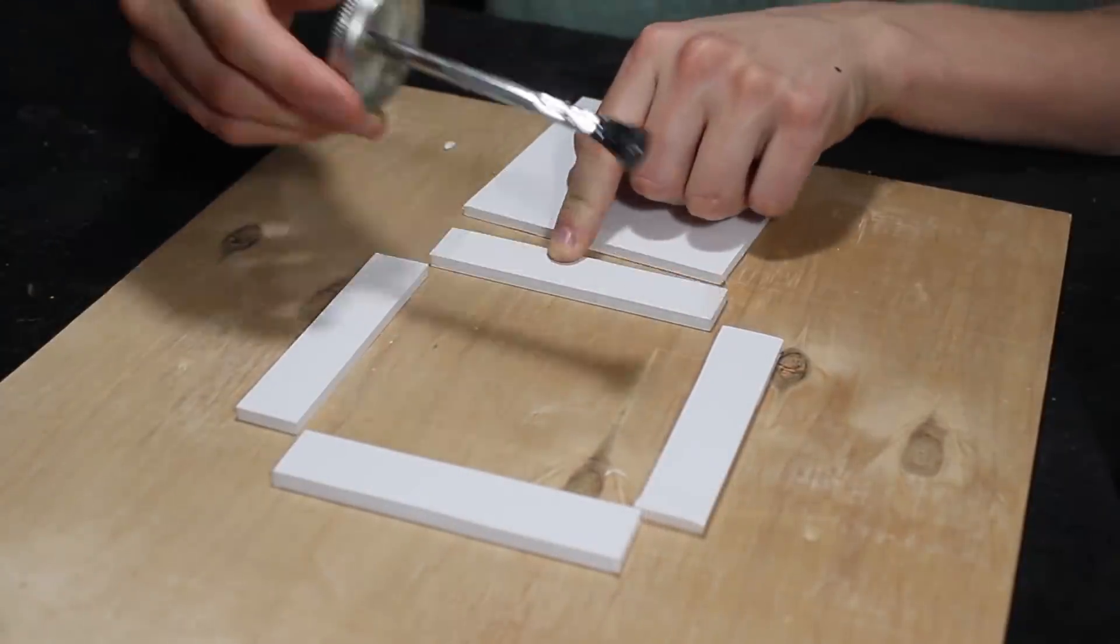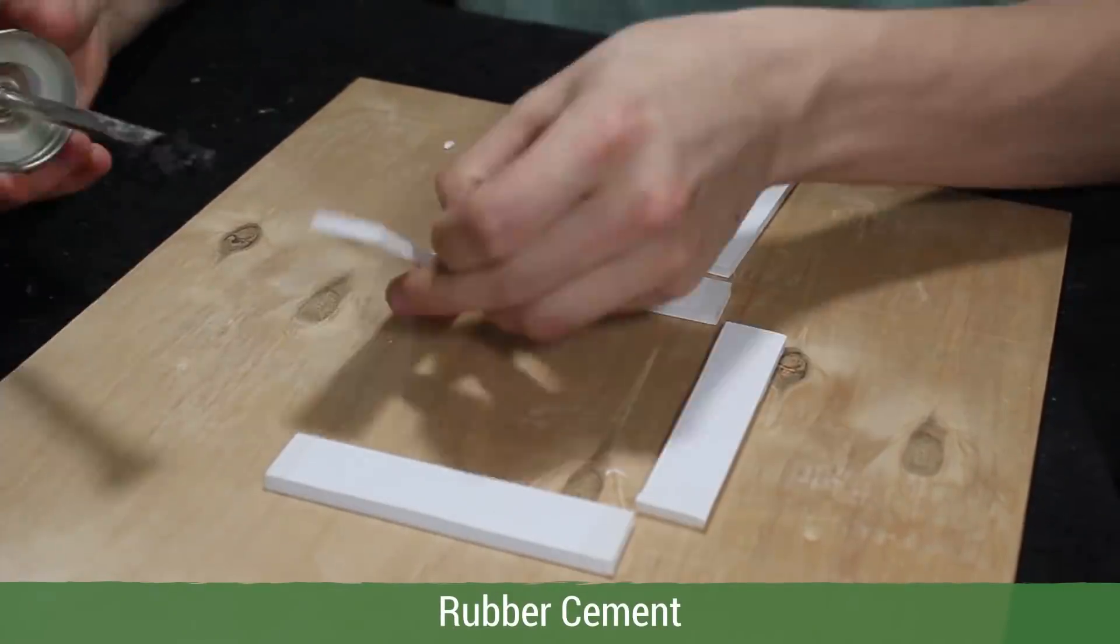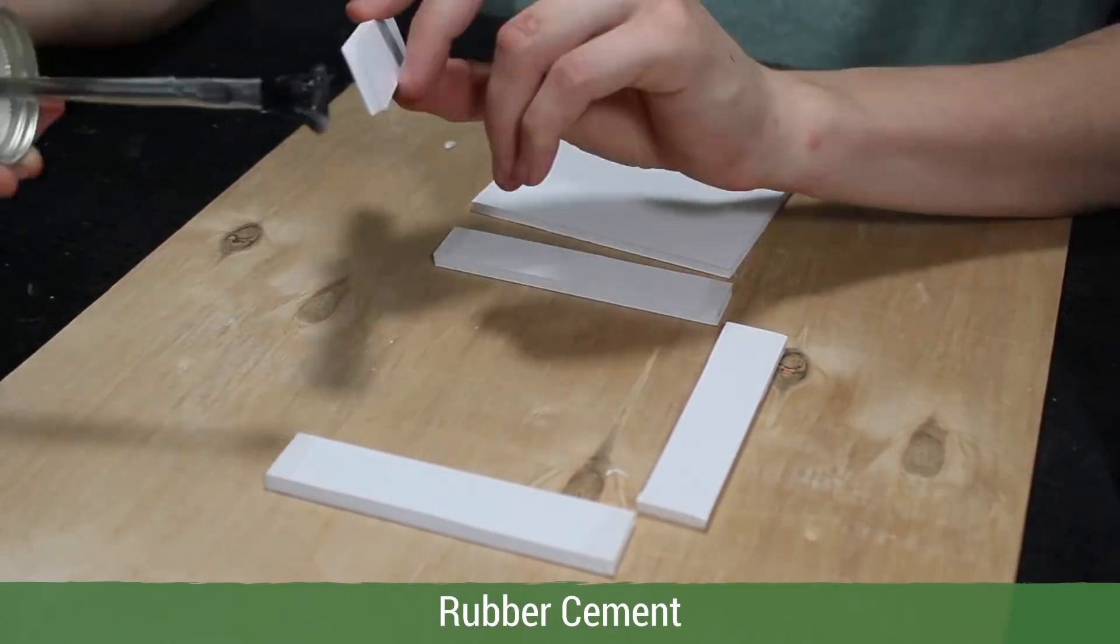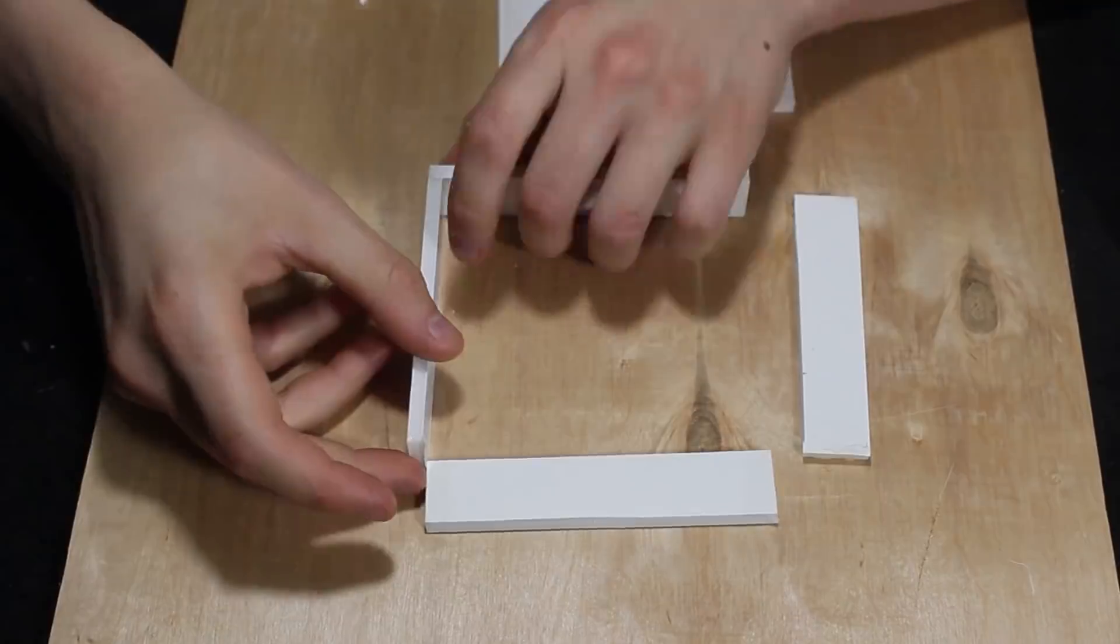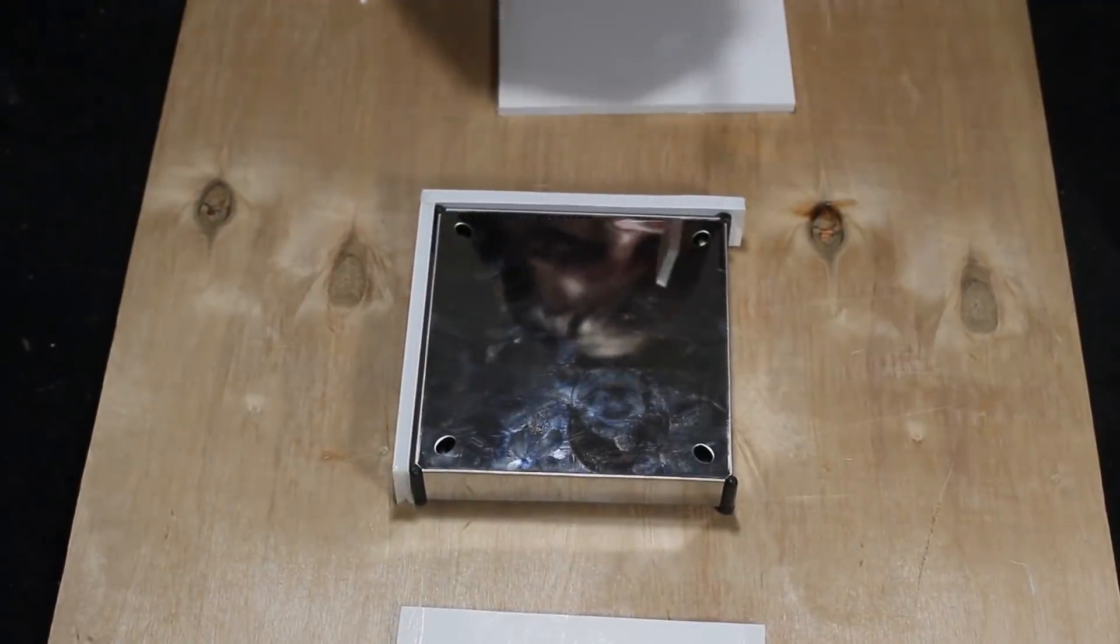Then I attach them together using some rubber cement. In case you've never used rubber cement before, it works best by applying it to both surfaces. Then you let the cement dry and put the pieces together, which is exactly what I'm doing here.